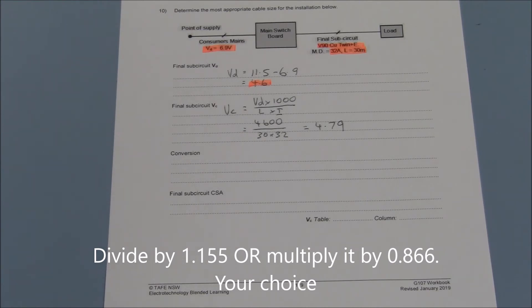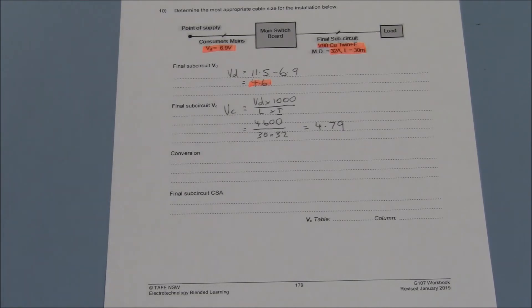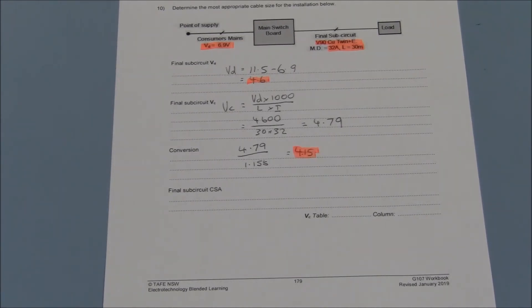Which is also mentioned in the equations in Section 4 of AS3008. This means that our selected cable can have a voltage drop of no more than 4.15 millivolts for every ampere flowing through it for every metre of its length.